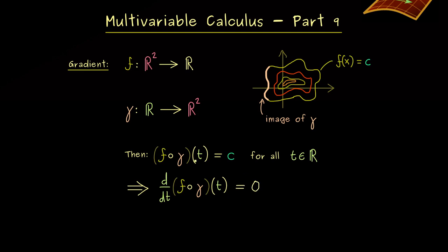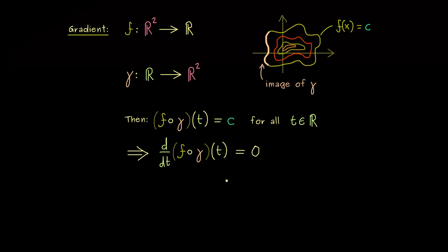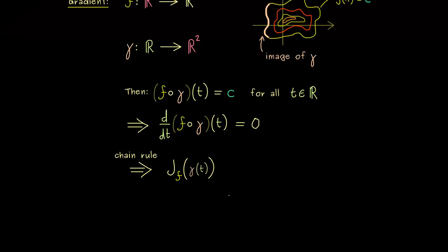And then we can do the same as in the last video. We can apply the multidimensional chain rule. This means we have a matrix product of two Jacobian matrices. So first we have the Jacobian matrix of f at the position gamma of t times the Jacobian matrix of gamma at the position t.